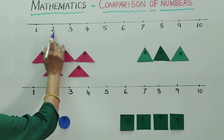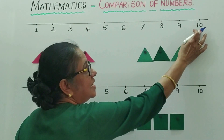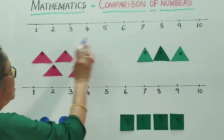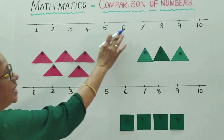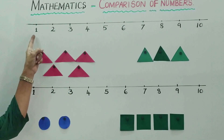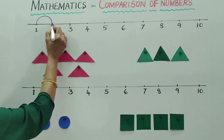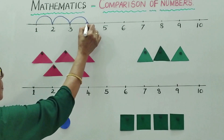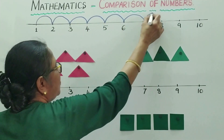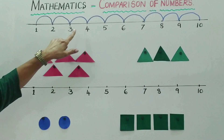For example, 2 is greater than 1, 3 is greater than 2, 4 is greater than 3, 2, and 1. Number 10 is greater than any of these numbers — 1, 2, 3, 4, 5, 6, 7, 8, 9. As you go up the value of numbers increases, going from 1 to 2, 2 to 3, 3 to 4, 4 to 5, all the way to 10.